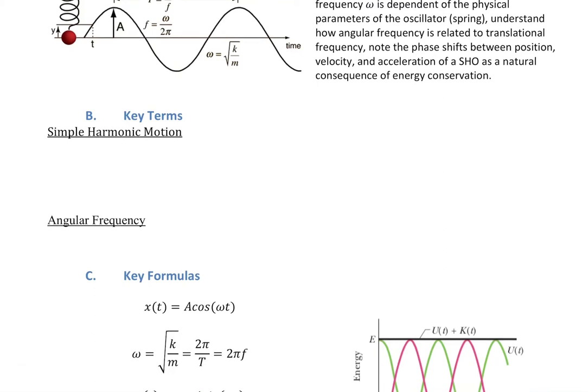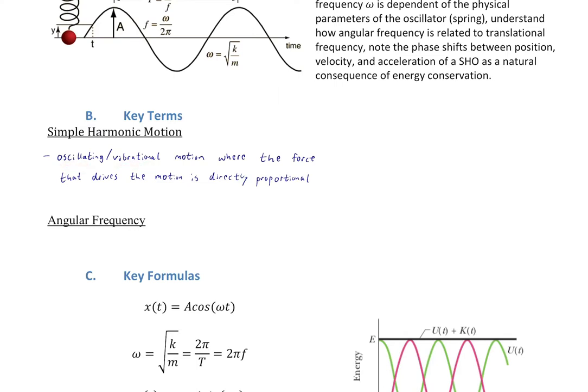Let's give a formal definition of simple harmonic motion. It is oscillating or vibrational motion — a spring bouncing up and down or shaking side to side — where the force that drives the motion is directly proportional, meaning linear, to the displacement from equilibrium. That's what we need mathematically for this to work. We can't show the full derivation — it's a solution to a differential equation beyond the scope of the class mathematically — but it still conceptually makes sense.